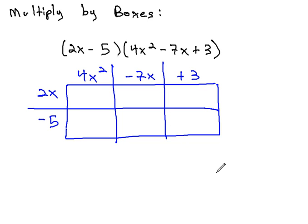This splits our box into six cells. We can fill in each cell of the box by multiplying the column and row headers. This first cell on the top left, we have 4x squared times 2x, which is 8x cubed.